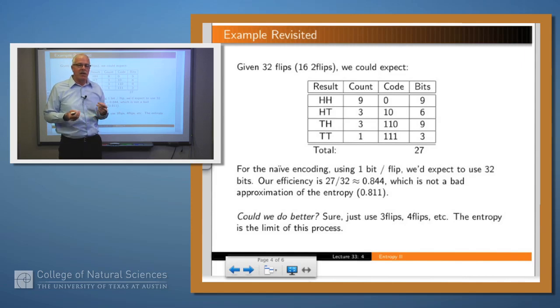So what does that say? It says that on average for this encoding, for 16 of these big experiments or 32 of our flips, we're going to use 27 bits. Remember, for the naive encoding, we're just going to use one bit per flip, which is 32. So the relationship between 27 and 32, or the ratio, is 0.844. So that's the efficiency of this new encoding. And you see that's better than using one bit per flip. It's not quite to the entropy, but it's pretty close.